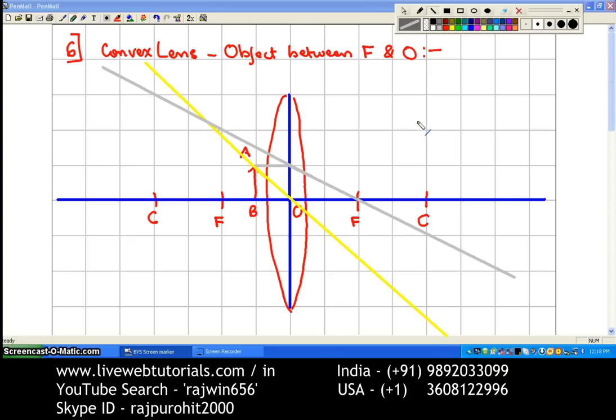Now you can see where both of these rays are meeting. The grey ray and the yellow ray, these both are meeting here on the same side. So this is the point at which both of these rays are meeting. You are going to draw this image. This is going to be the position of your image.